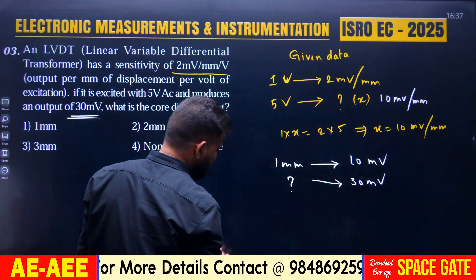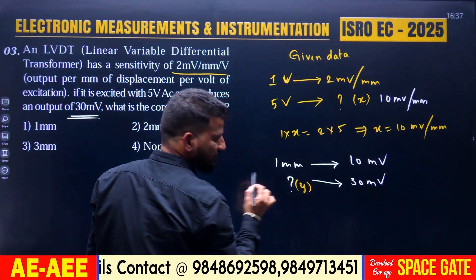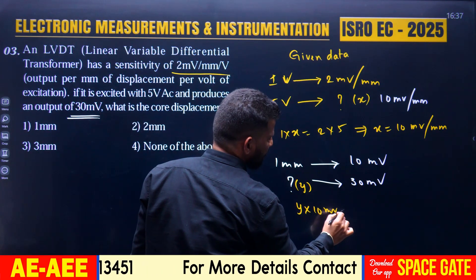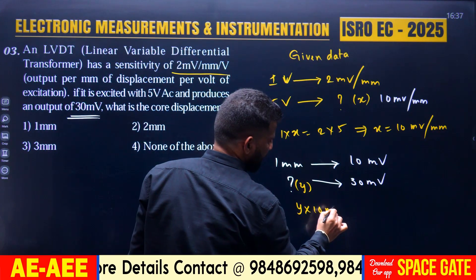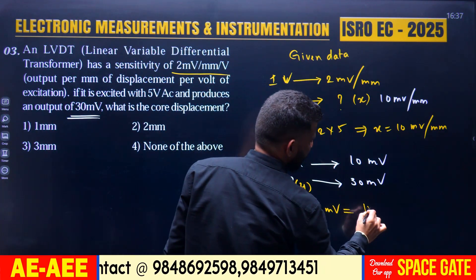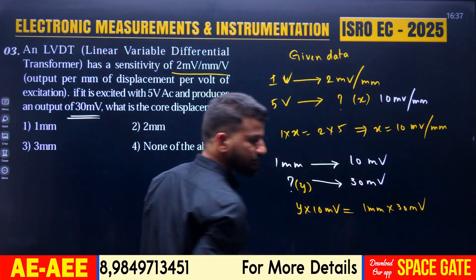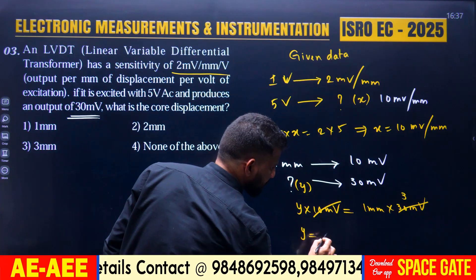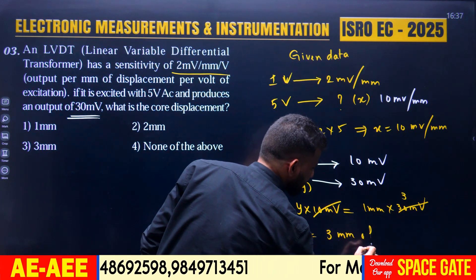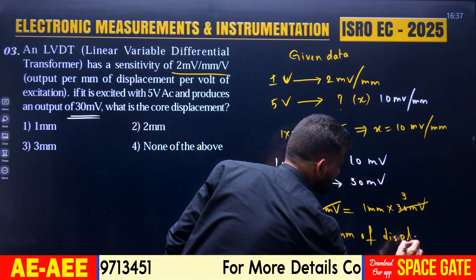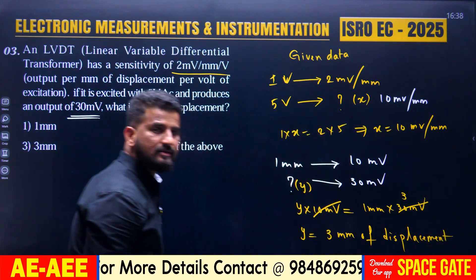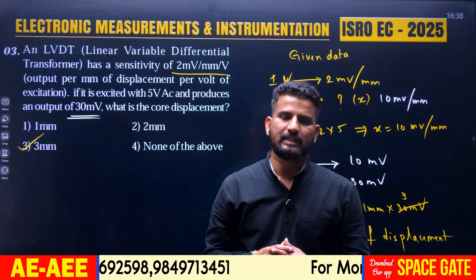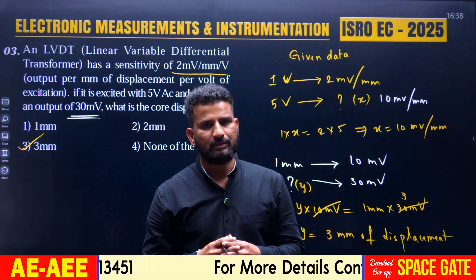To find the displacement to get 30 mV output, let the displacement be y. Cross multiplying: y × 10 mV = 1 mm × 30 mV. The 10 and 30 simplify — mV cancels — giving y = 1 × 3 = 3 mm of displacement. So the answer is 3 mm, and the third option is correct. These are the questions asked in the ISRO examination with respect to electronic measurement and instrumentation. Thank you.